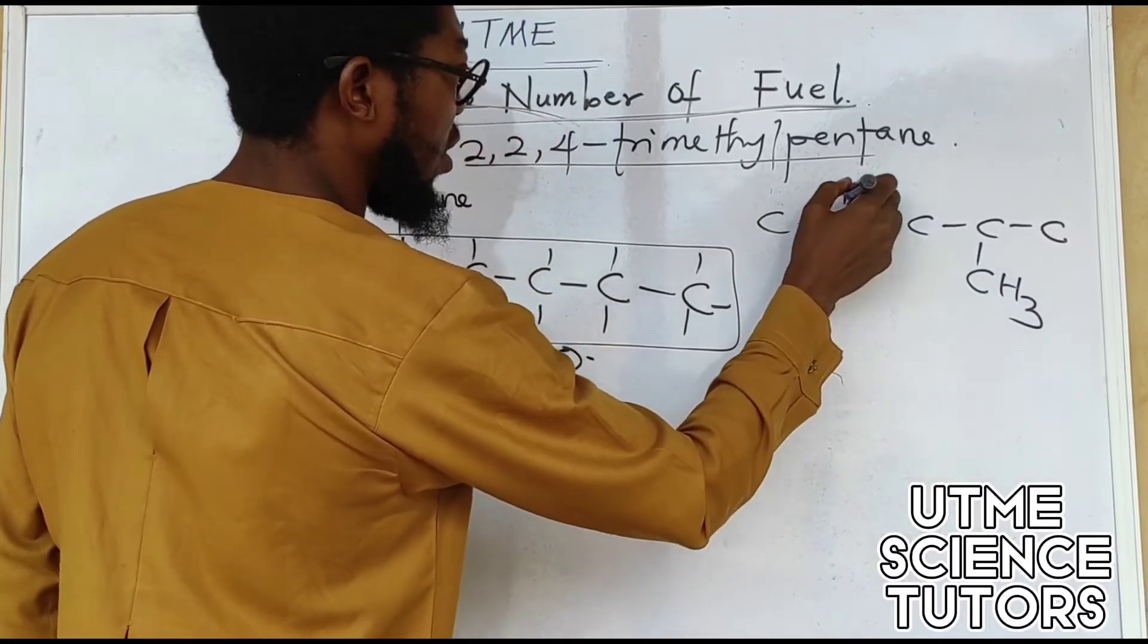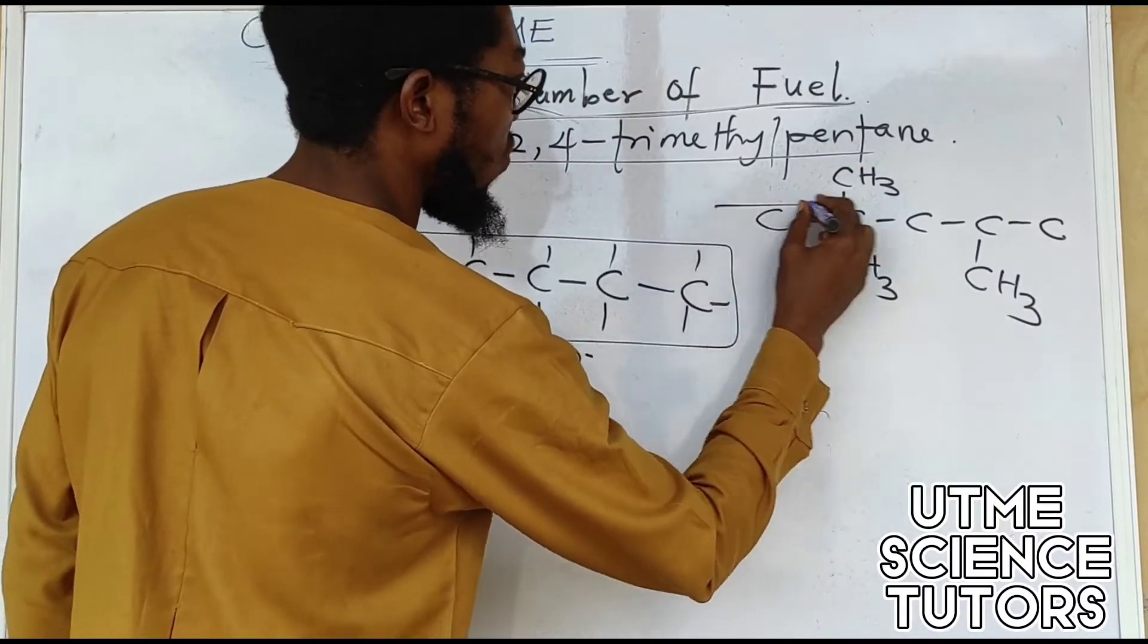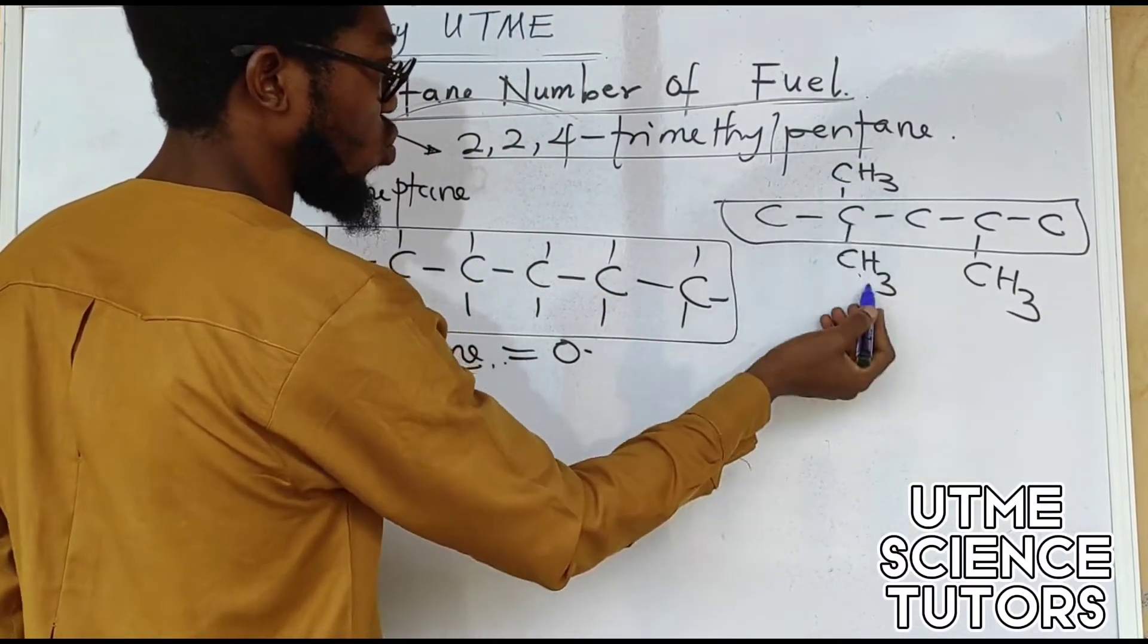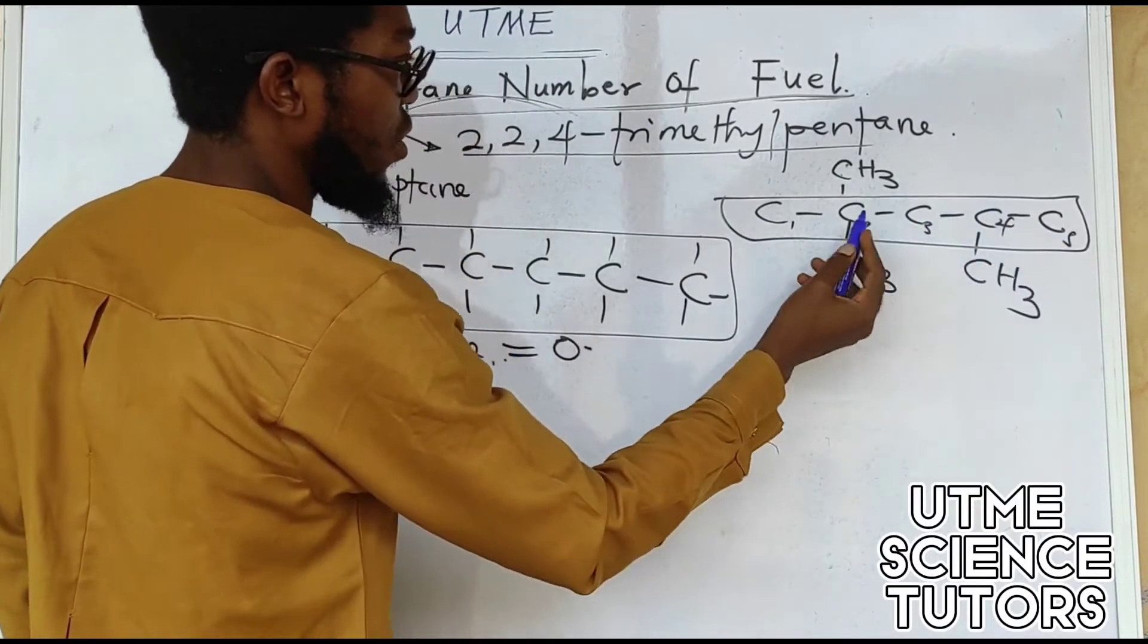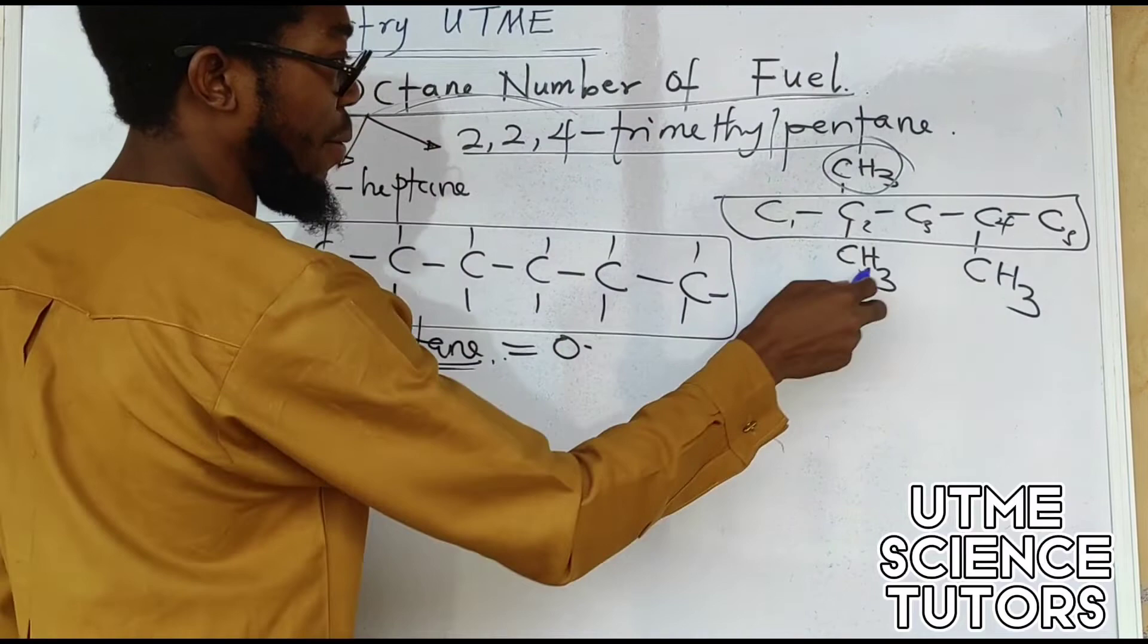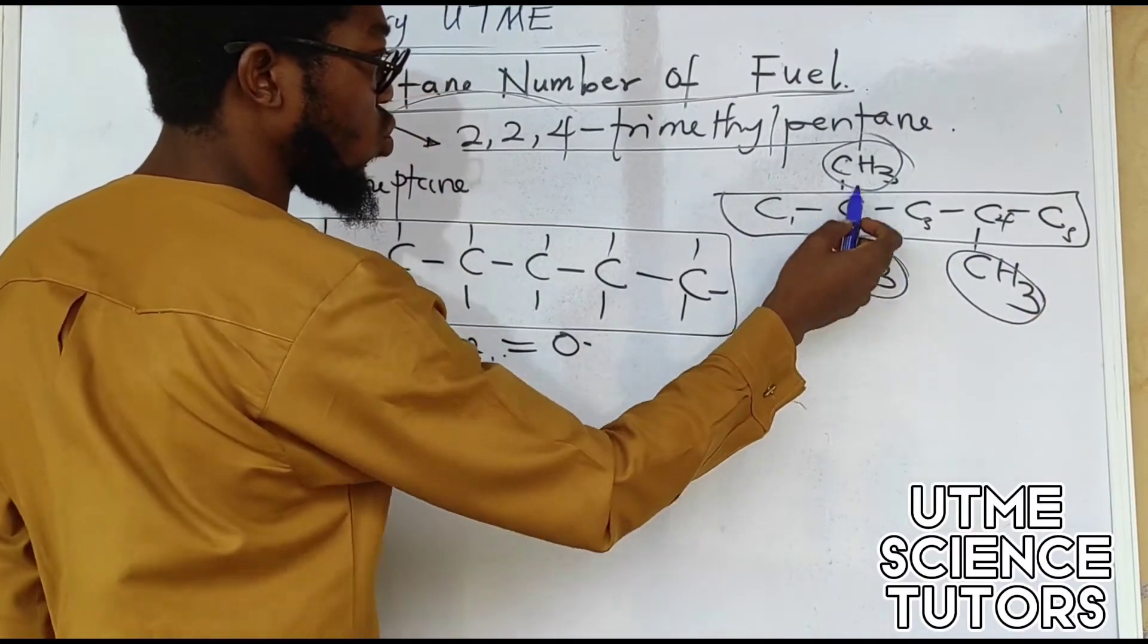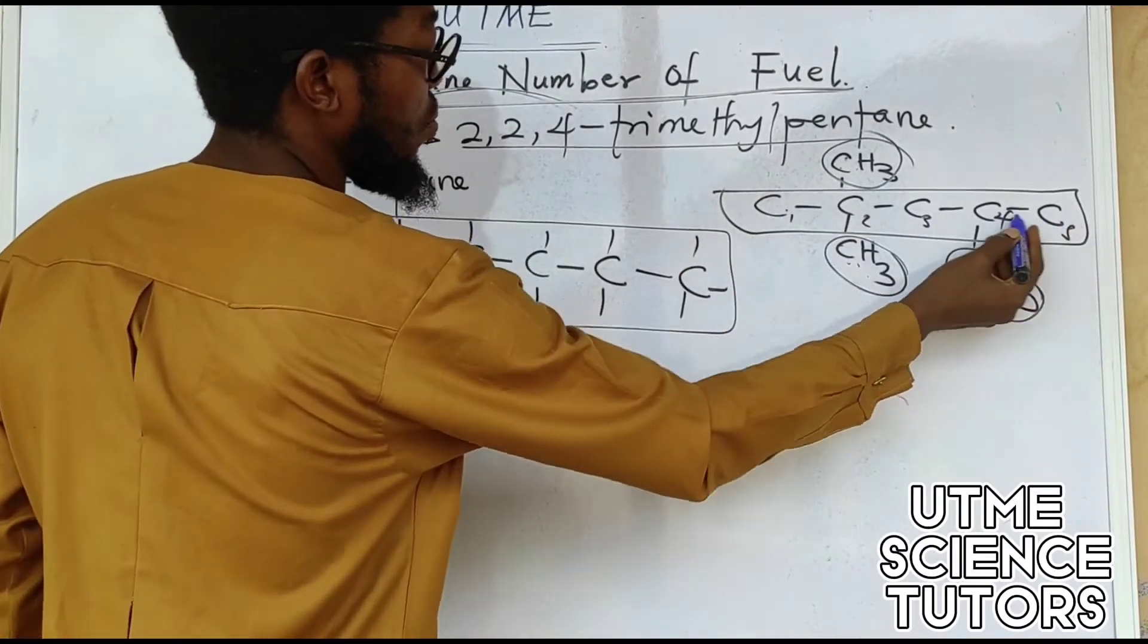So we have one CH3 here, then CH3, CH3. If I take here to be my root name, I'm going to be having 2,2,4. This is carbon number one, carbon two, carbon three, carbon four, five. So I have my substituents on carbon two, carbon two, and carbon four. So the name is 2,2,4-trimethyl, five carbons, pentane. That's the root name.